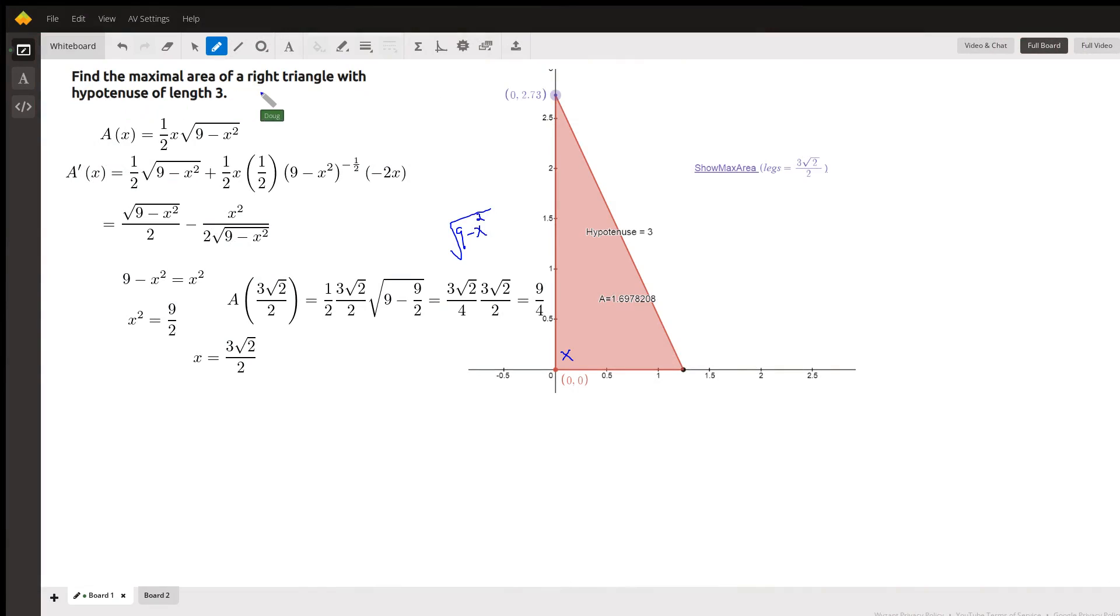Okay, you're given that you have a right triangle with a hypotenuse that has a length of three. There are infinitely many triangles that have that property, but we want to find the one that has the maximum area.